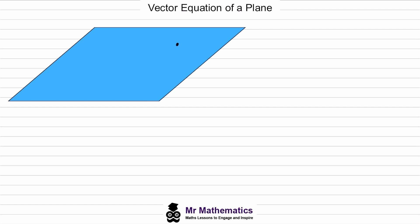Let's say we have this point here, which I'll label r. To find the location of this with respect to a fixed point which we'll call the origin, we want to describe this vector in three dimensions. To do this, we need to know a point that lies on the plane, given by a position vector which we'll call a. We also need to know two direction vectors that run parallel to the plane but not parallel to each other — we'll call these s and t.